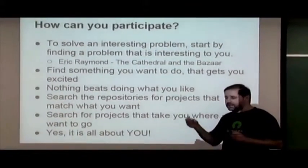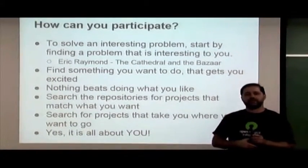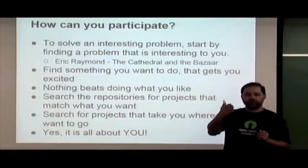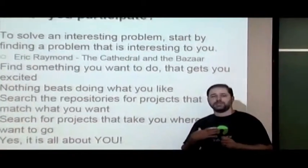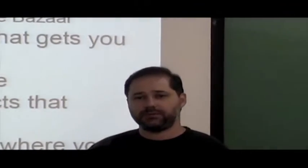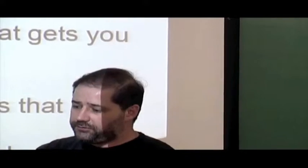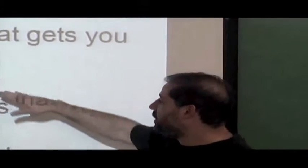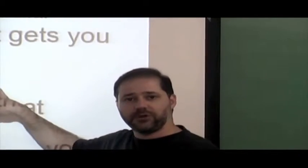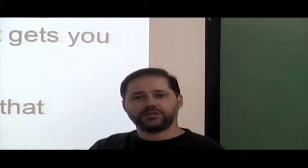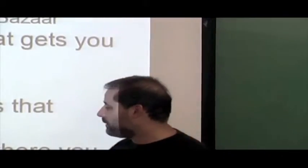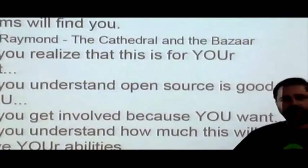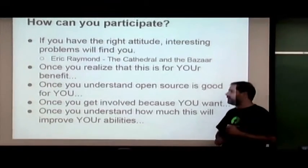Find a problem that's interesting to you. A lot of people ask how to find something interesting to work on — first, think about what you find interesting, because when you find something interesting to you, you'll find an interesting problem that needs solving. Find something you're excited about, because nothing beats doing what you like. The free and open source movement is about doing the things you think are important and that you enjoy. It is all about you — you can do things that are good for you, and by doing that, you make good things for everyone else.